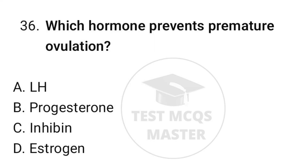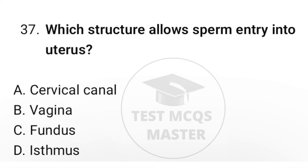Question number thirty-six: which hormone prevents premature ovulation? The correct option is C, inhibin. Question number thirty-seven: which structure allows sperm entry into the uterus? The correct option is A, cervical canal.